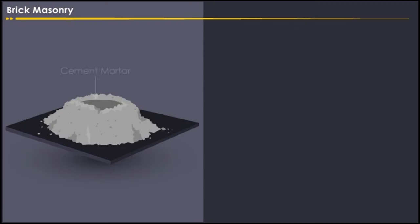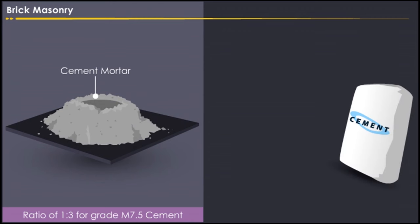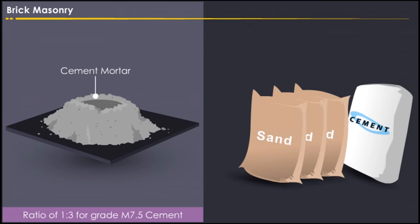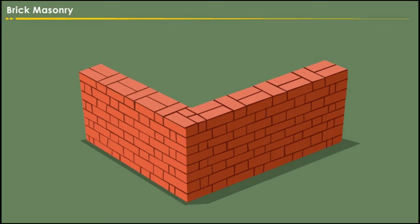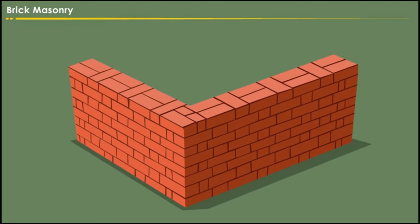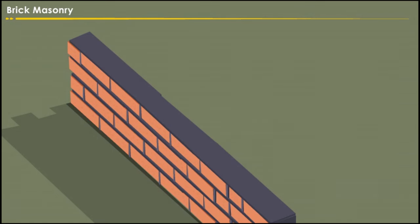Let us now discuss the process of making cement mortar. The preparation of cement mortar is done in the ratio of 1 is to 3 for grade M7.5 cement — that is, one bag of cement for three bags of sand. Add water to the cement whose ratio is 70 percent of the weight of the cement.